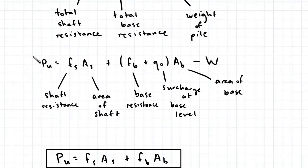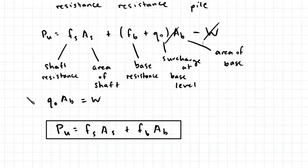We can now assume that the product of the surcharge at base level and the area of the base is equal to the weight of the pile. And hence these two terms cancel out, and we are then left with this expression for the ultimate axial pile capacity.